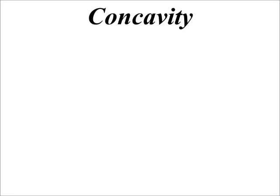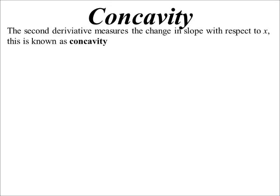Concavity — that's what we're going to look at today. The first derivative, when we're looking at a graph, measures the slope of the curve, or more particularly the slope of the tangent at that point. Now if a derivative measures a rate of change, then the second derivative must measure the rate of change of the first derivative. So if we're talking about a graph, we're asking how does the slope change? That's what we call concavity.